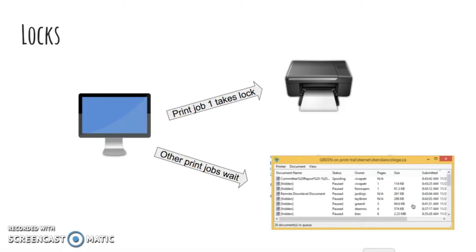Let's talk about another real-world example. Usually a printer is shared by all the threads or processes in its system. So when a text editor issues a print job, the printer is exclusively being locked by that editor, so that any other editors giving out print requests would have to wait. You can view this ordering in the print queue on your computer.